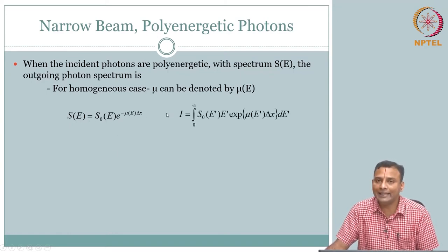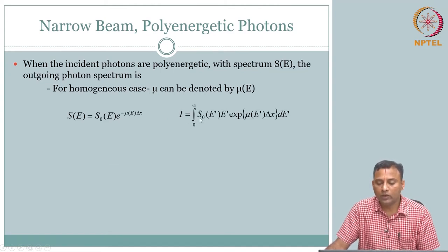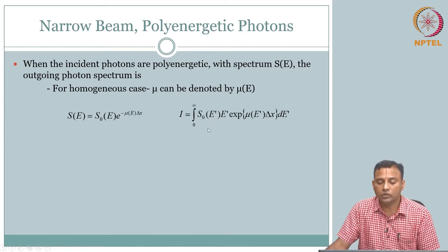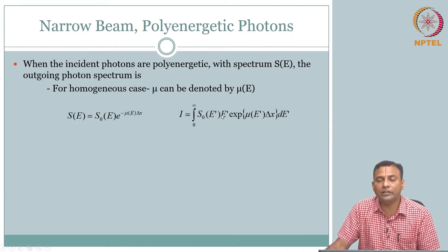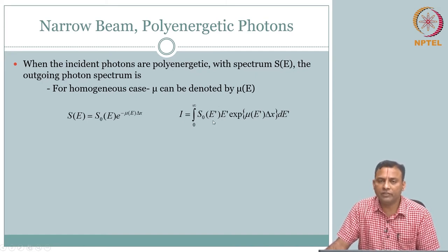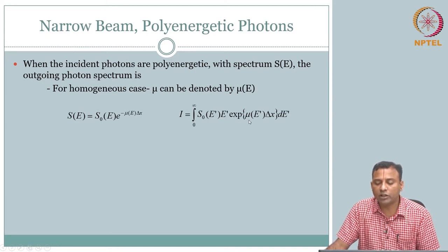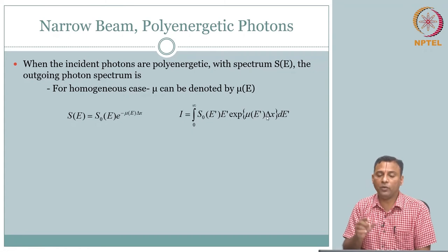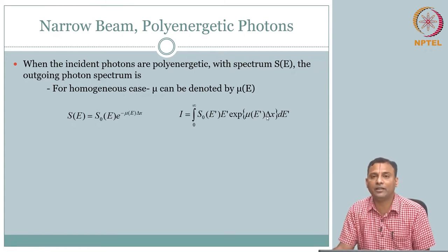You can also write the intensity counterpart. I is whatever goes in — S of E' — and the number of photons. This spectral line gives you the number of photons at energy level E' times the energy of each photon at that level. That is the same definition contextualized here: exponential of mu of E' over delta x.